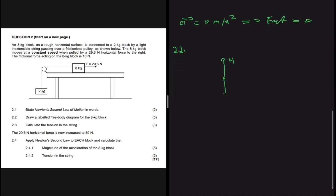Because it's lying on the surface, the surface exerts a normal force upward. Gravitational force is always acting, so we have F_g or weight. Then we have the applied force of 29.6 N. Friction is also acting, and since the block is connected to a 2 kg block through a string, we also have tension. Those are the forces acting on the 8 kg block.